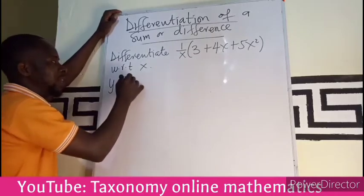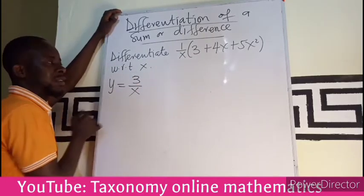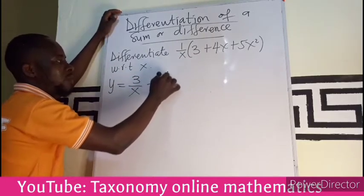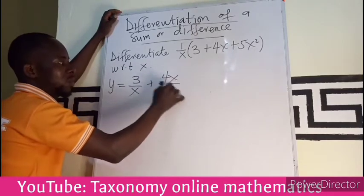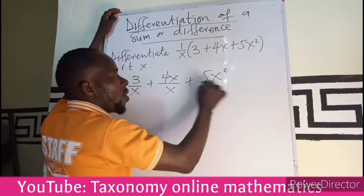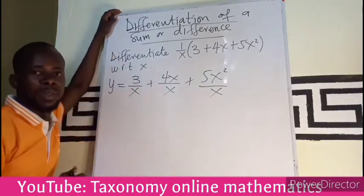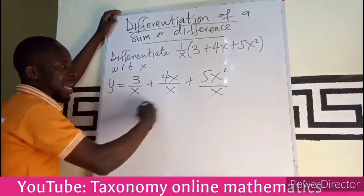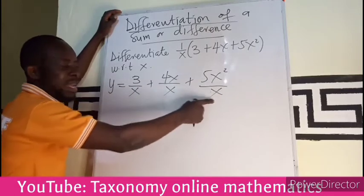If I use this to multiply, it gives me 3/x plus 4/x, then plus 5x/x, then plus 5x²/x. Watching from this side you can see that there is a common factor here.